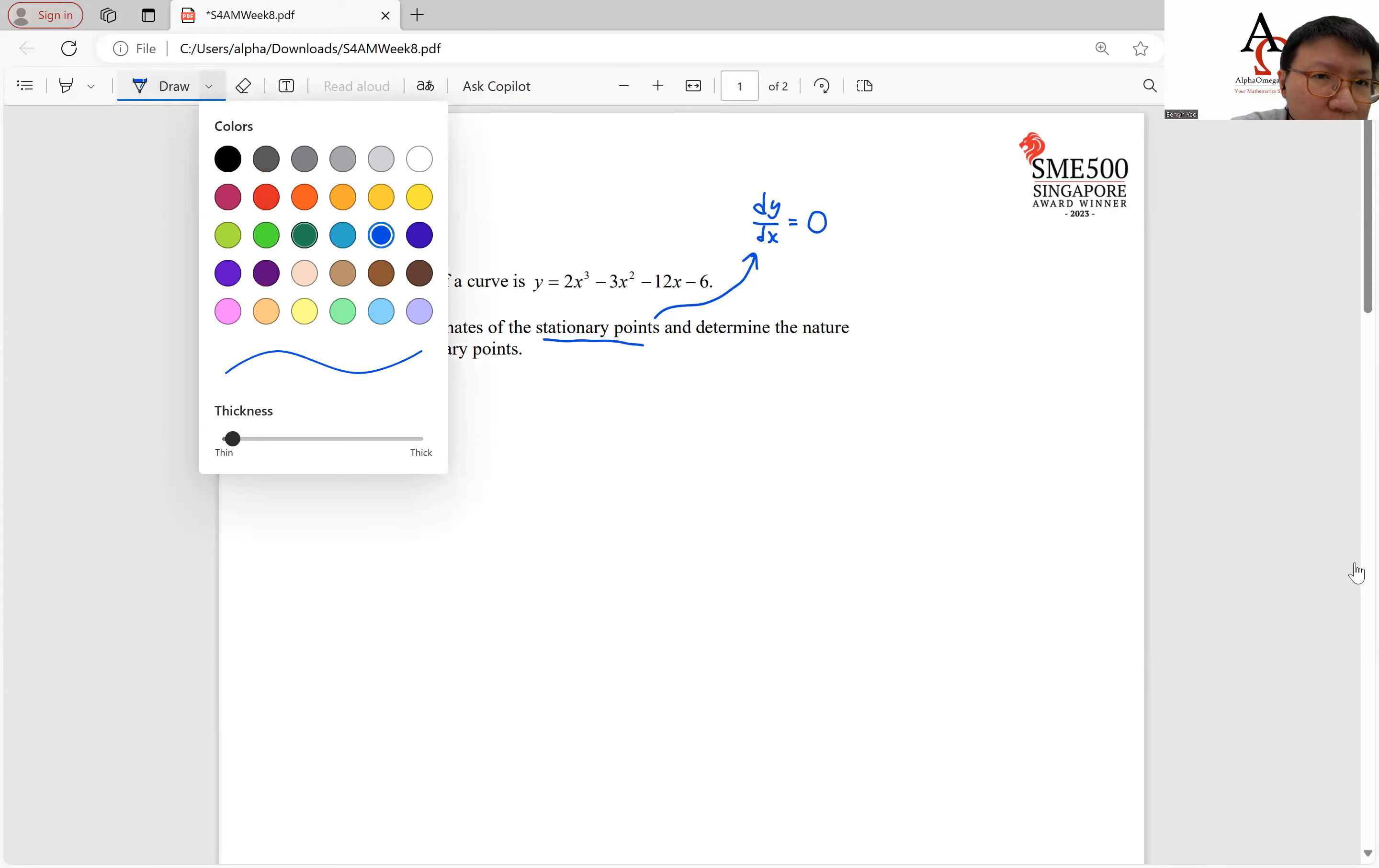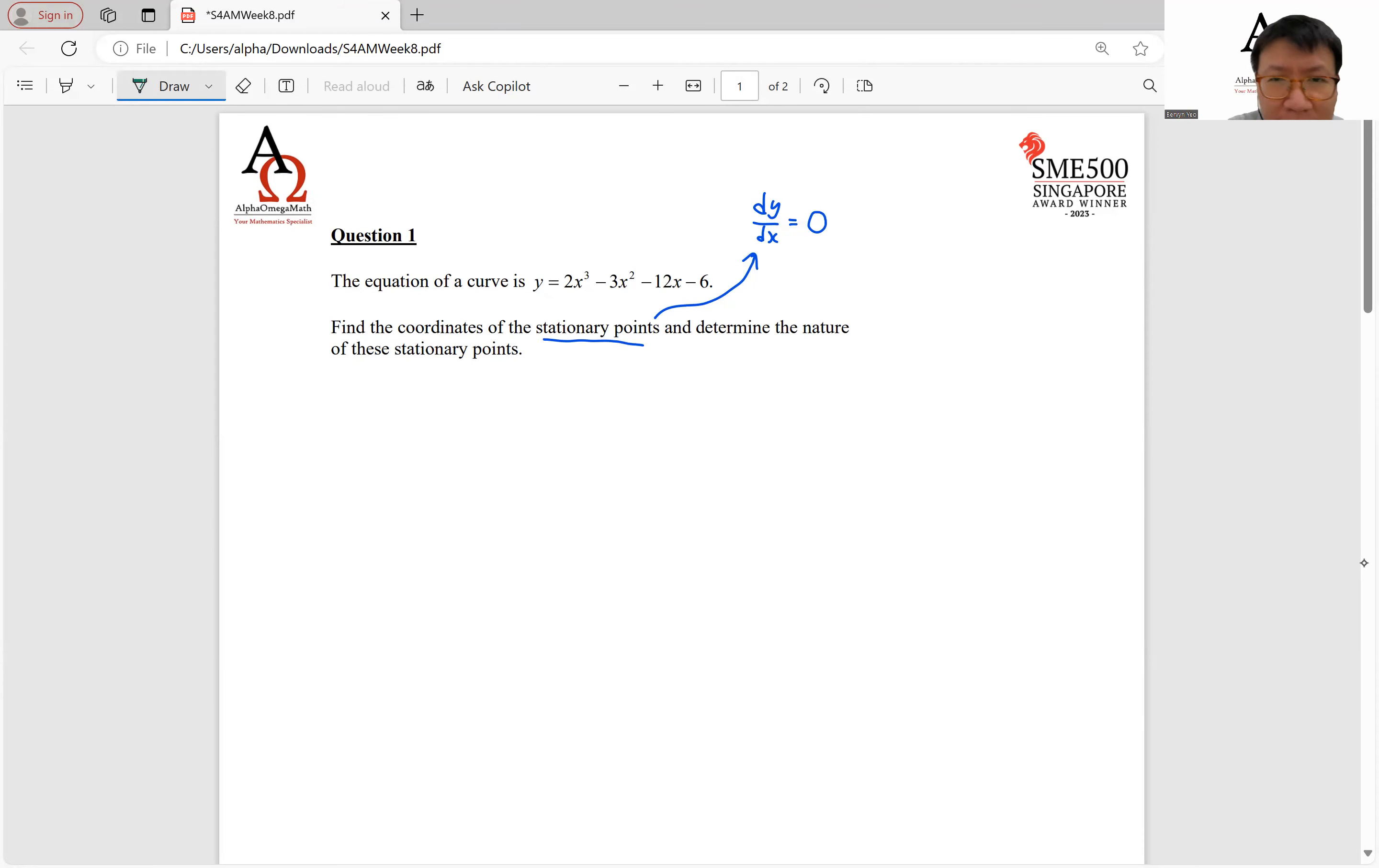So there are a total of three different types of stationary points. You have your minimum point, your maximum point, as far as a point of inflection, which could either be upwards or downwards.